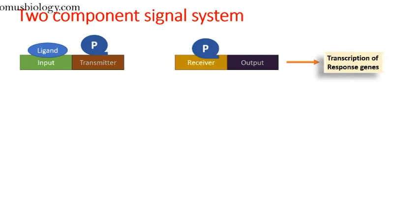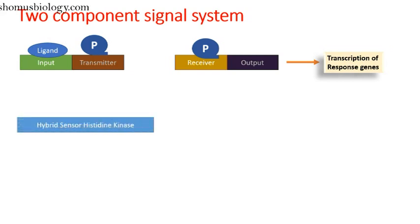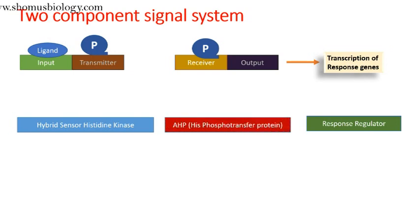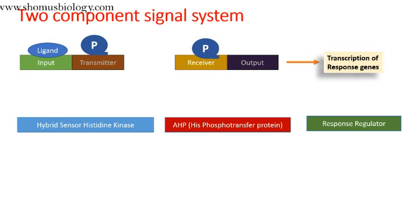Now let's see the two-component system involving a third protein. Here we also see the hybrid sensor histidine kinase and the response regulator just like in an ordinary two-component system, but this time we have a third segment: AHP, the histidine phosphotransfer protein. The role of AHP is to take the phosphate from the hybrid sensor histidine kinase and transfer it to the response regulator, helping the crosstalk between the sensory element and the response regulator element.